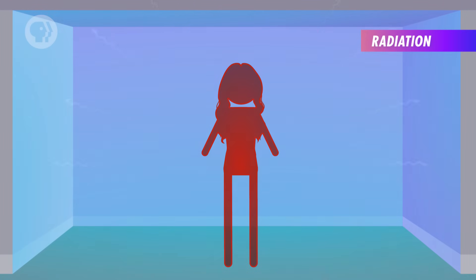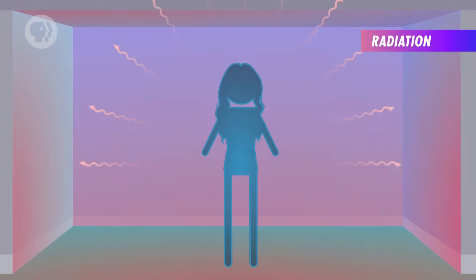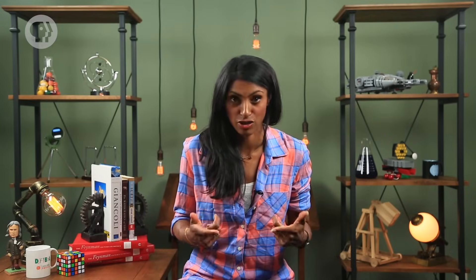You can also lose heat through radiation. If the walls, floor, and ceiling of the room you're in are colder than you, you'll radiate more heat to them than they'll radiate to you. Clothes don't stop you from radiating heat, but they can keep you warm enough for the heat that your body produces to keep up with the heat you're losing through radiation.